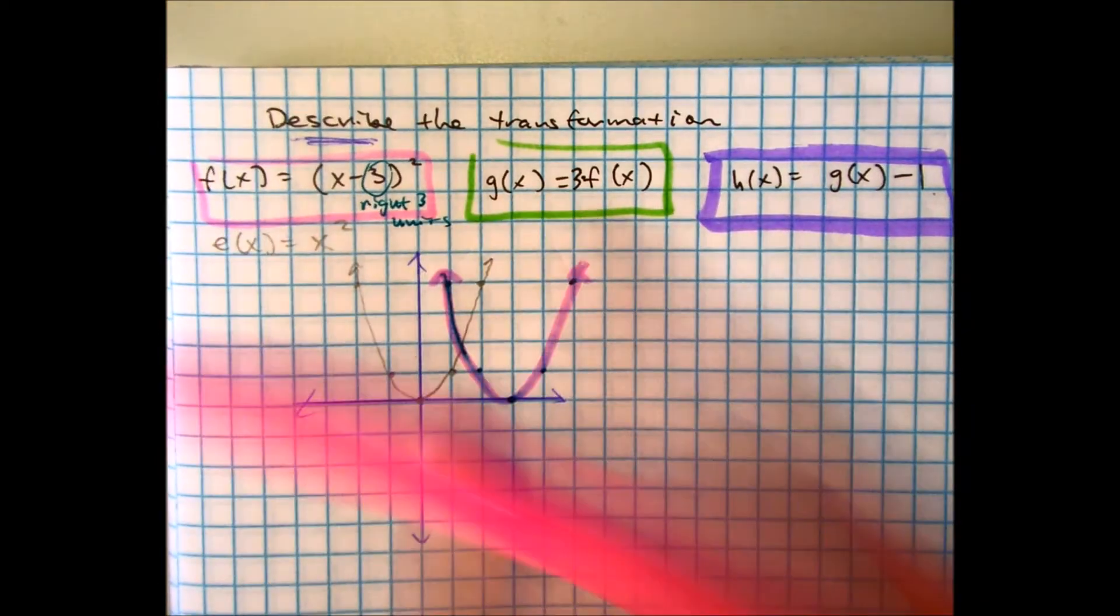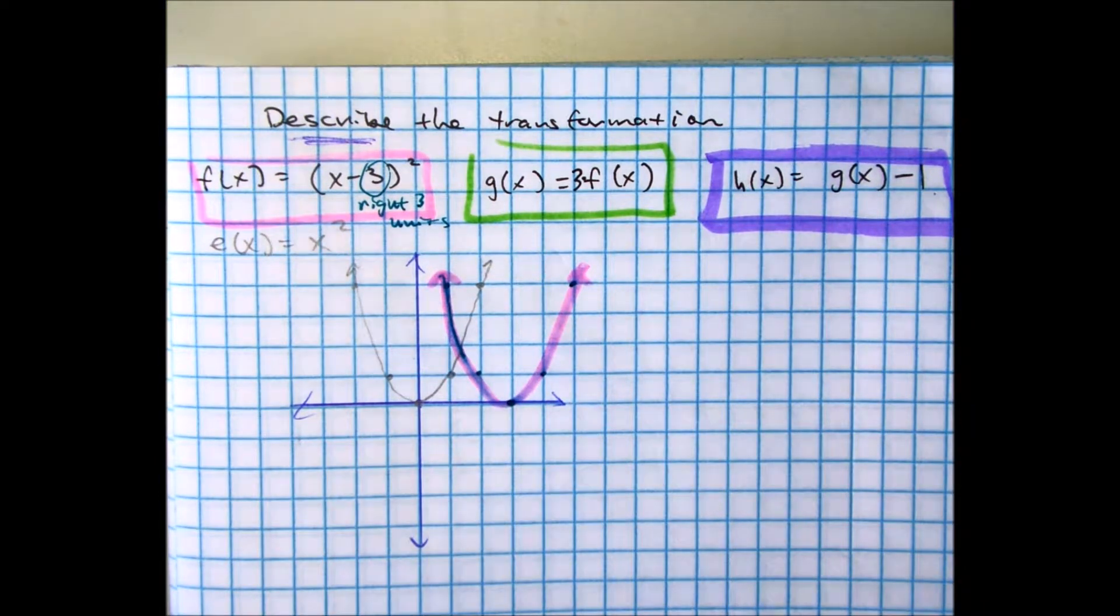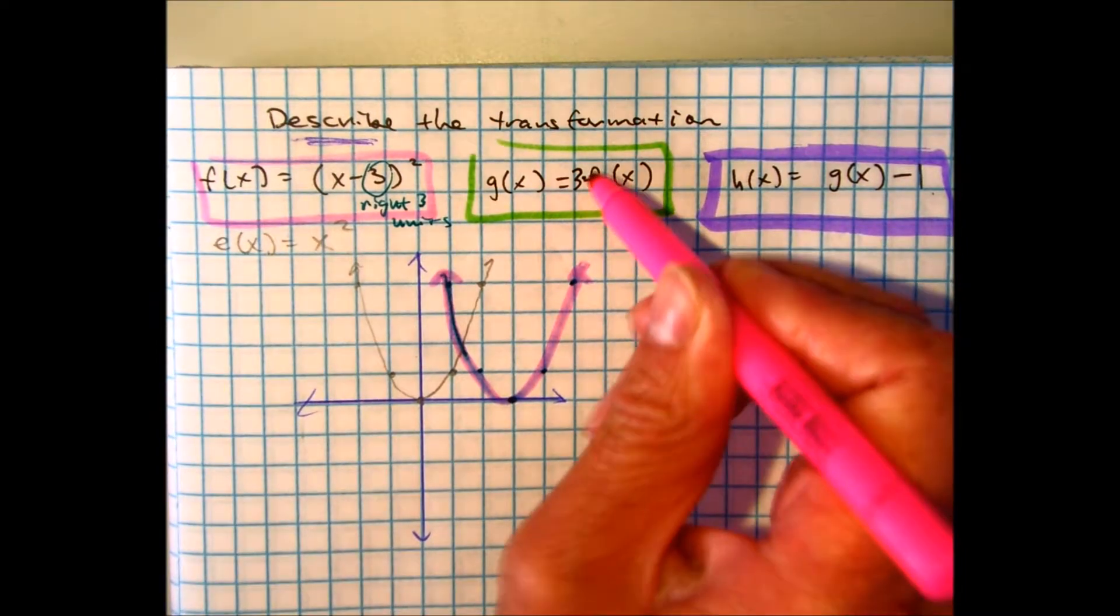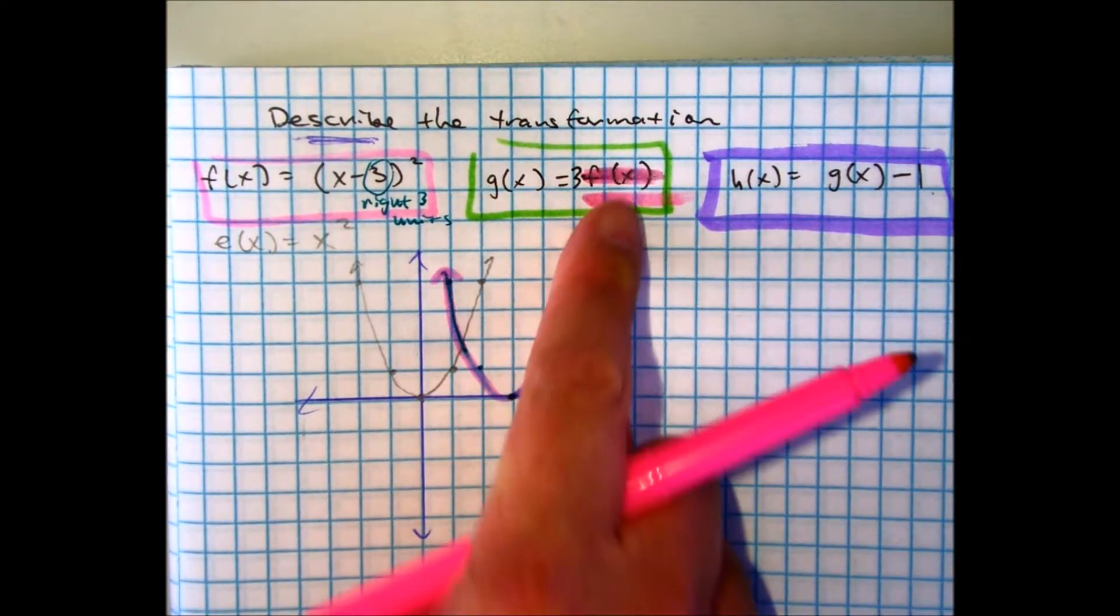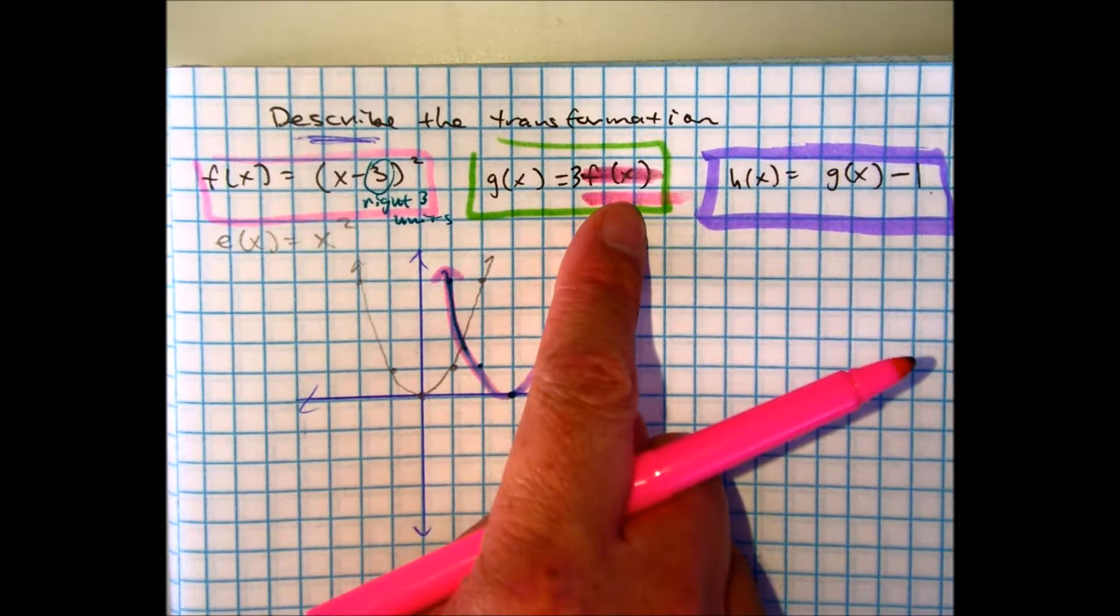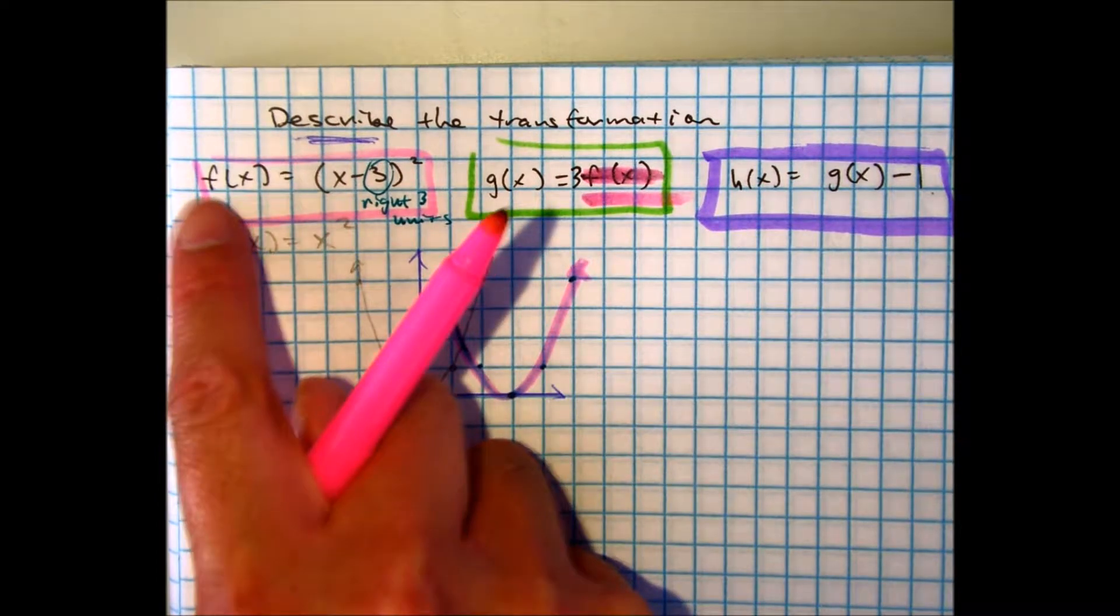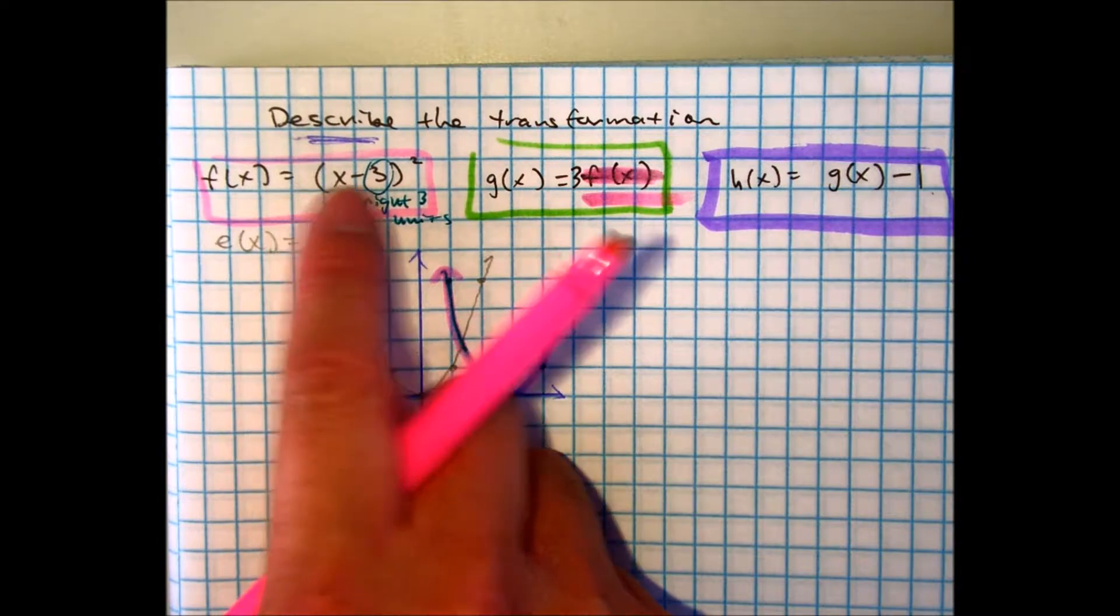Now, from pink to green, I want to show you a couple of things. Instead of writing F of X, I can write what? Well, over here it says every time we see F of X, write X minus three squared.